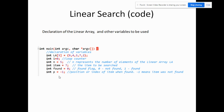Let's now examine the code of a simple linear search. We have here a declaration of the linear array — integer LA with a size of five and its initial values. Then we have integer i equal to zero, which will be our loop counter.